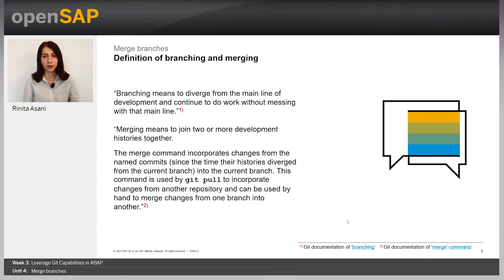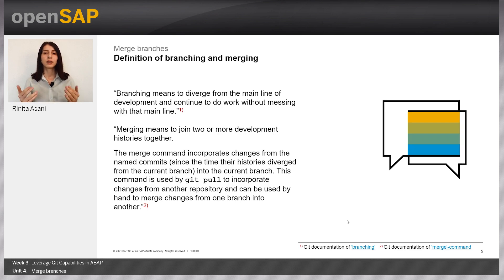Merging means to join two or more development histories together. During a Git merge, Git uses two commit pointers — usually the tips of the branches — and tries to find a common base. Once it has found a common base, it creates a new merge commit and incorporates the changes into one unified history. This command is also used by Git pull to incorporate changes from another repository and to merge changes from one branch into another.